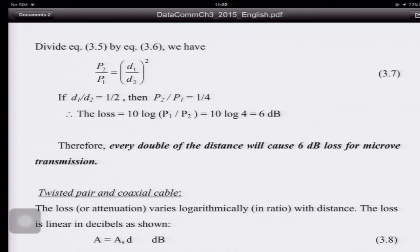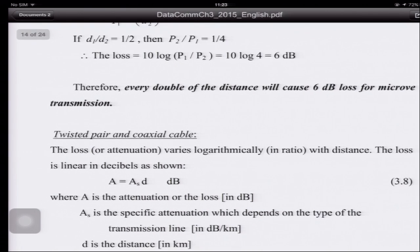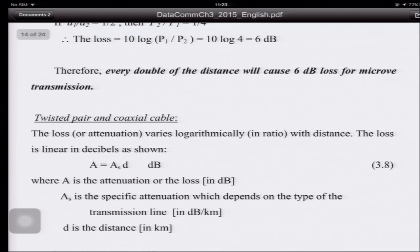For example, if you receive 1 watt at 1 km, you will receive only 0.25 watts at 2 km. Every time you double the distance, the microwave suffers approximately 6 dB of additional loss — or equivalently, the received power drops to one-quarter of its value.